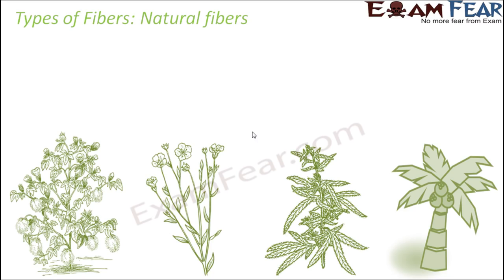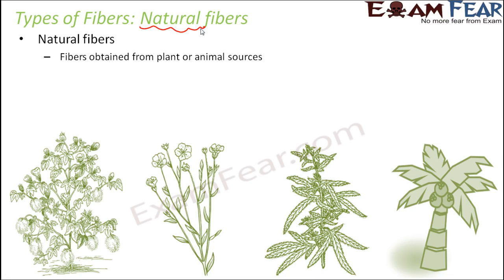Fibers are broadly classified into two types: natural fibers and artificial fibers. Natural means it exists in nature — we do not produce it artificially. These fibers are obtained from plant or animal sources. For example, silk is a natural fiber because it is obtained from the silkworm, which is a tiny insect — similar to caterpillars. From those worms we obtain natural silk.